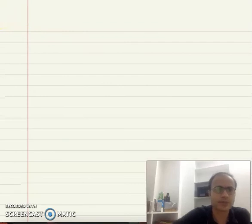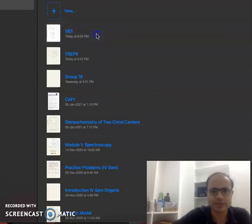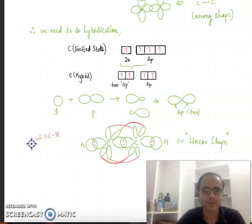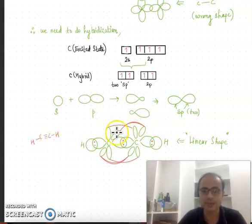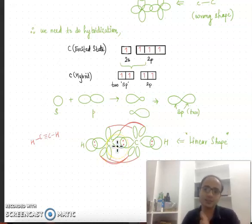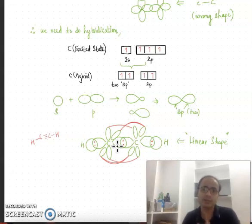In acetylene, the structure contains two pi bonds and one sigma bond. The two pi bonds arise from two sideways overlaps between the p orbitals, giving the multiple bonds in the acetylene molecule. This is the advantage of VBT — it is able to clearly explain in terms of atomic orbitals how the pi bonds or multiple bonds form in these compounds.